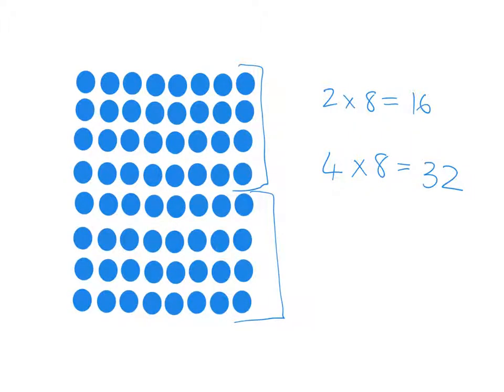And hopefully you can immediately see how knowing your 4 times table then takes you straight to knowing your 8 times table, because all you're doing when you've got 8 lots of 8 is you've got 4 lots of 8 and another 4 lots of 8. So you're going to have 64, double 32.